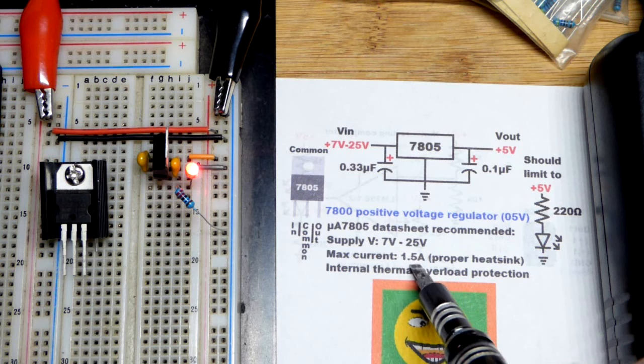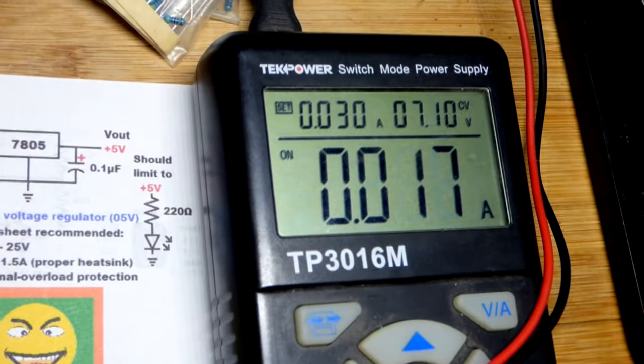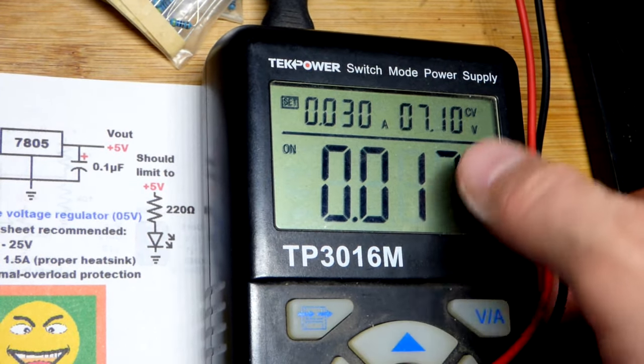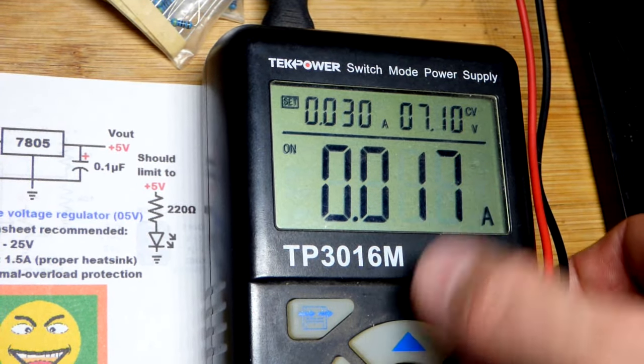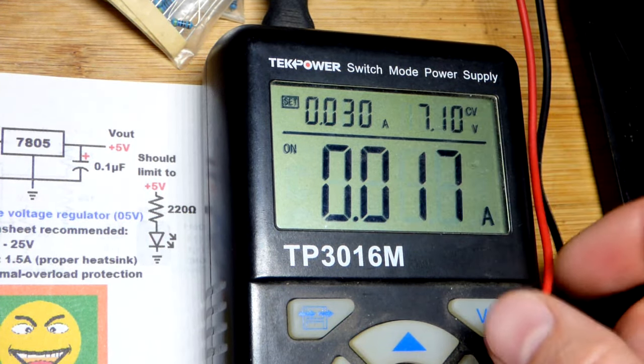You could do about 1.5 amps or so. According to a datasheet I read a long time ago, it also said we could go up to 25 volts. So we've got 7 volts. You're going to see that the current does not change. I mean, it might change for a brief second when I change the voltage.